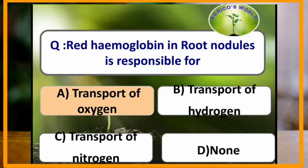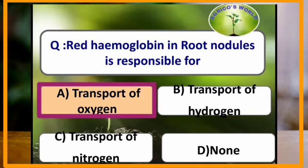Red hemoglobin in root nodules is responsible for which function? Red hemoglobin in root nodules is responsible for the transport of oxygen.